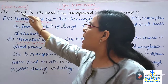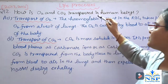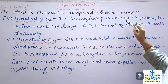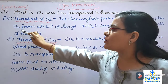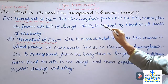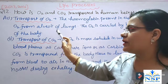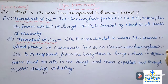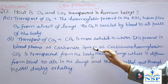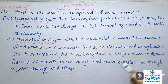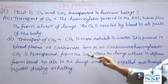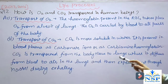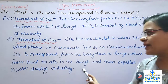Next question: How are oxygen and carbon dioxide transported in human beings? Transport of oxygen: The hemoglobin present in RBCs picks up oxygen from the alveoli of the lungs. The oxygen is carried by blood to all parts of the body. Transport of carbon dioxide: CO2 is more soluble in water. It is present in blood plasma as carbonate ions and as carbaminohemoglobin. Carbon dioxide is transported from body tissues to the lungs, where it diffuses from blood to air in the lungs and is expelled out through the nostrils during exhalation.